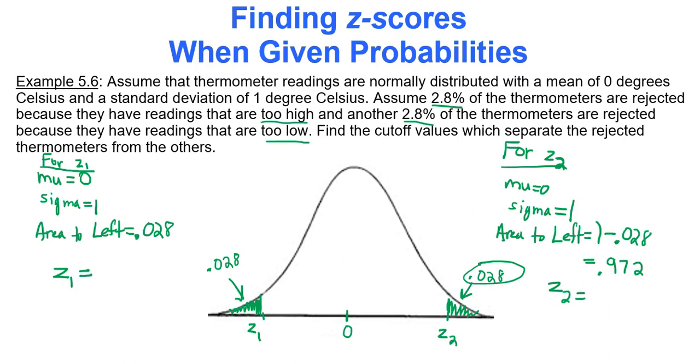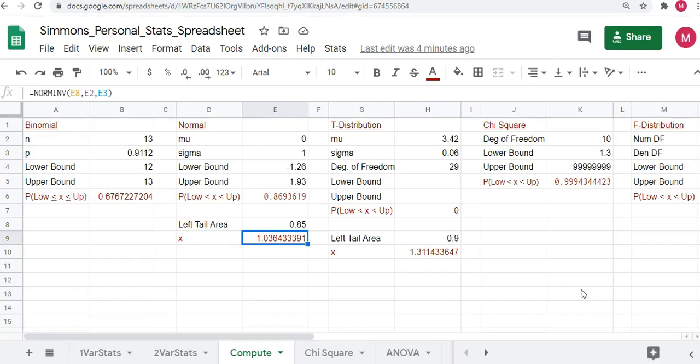So what's going to happen here is let's type all this information into Google Sheets. We have two separate things we'll be typing in. So Google Sheets to the rescue, mu and sigma are already 0 and 1. So my left tail area for my lower cutoff value is 0.028. You get negative 1.91, and then the left tail area for my larger cutoff value will be 0.972. The area to the left is 0.972. It's positive 1.91. How could this be? It's the same number, just the negative version and the positive version.